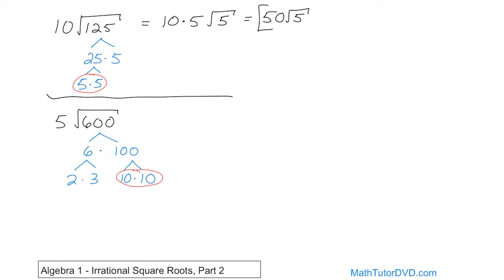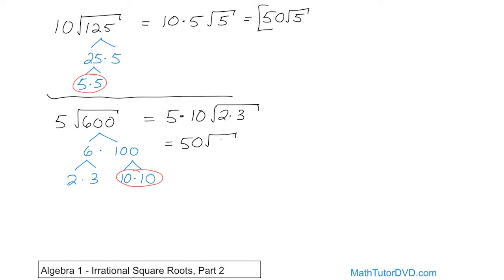When I pull that out, I have a 2 under the radical and a 3 under the radical. The 5 is still there times what I can pull out, which is this 10. Underneath the radical has to be everything else left over that doesn't have a pair, which is the 2 times the 3. Neither one of those has pairs. So at the end of the day, you're going to have 50 times the square root of 6. That's the final answer.